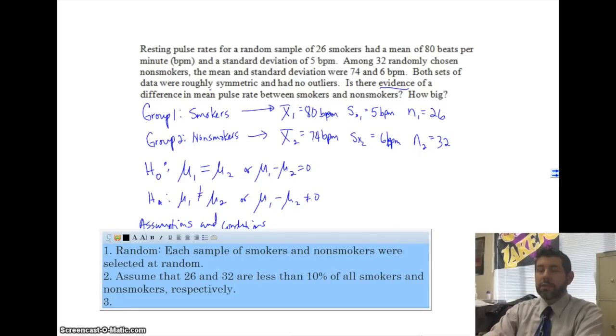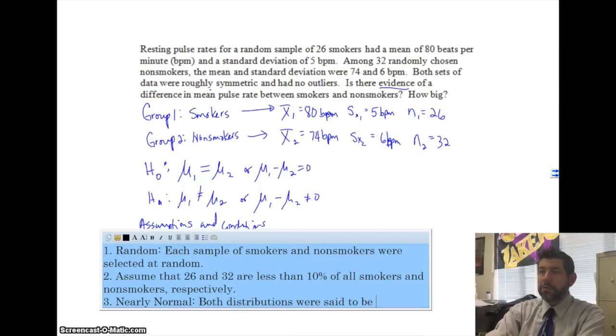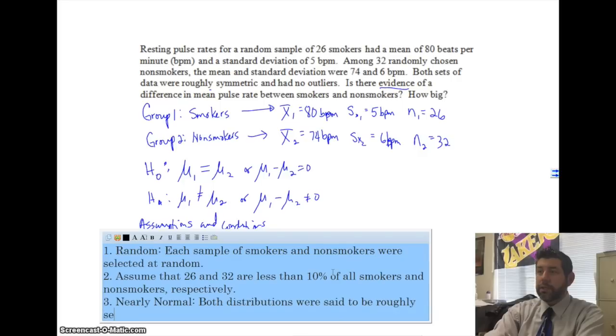Our second one is our 10% condition. We're going to go ahead and assume that 26 and 32 are less than 10% of all non-smokers and smokers, respectively. So, I put it in one sentence.